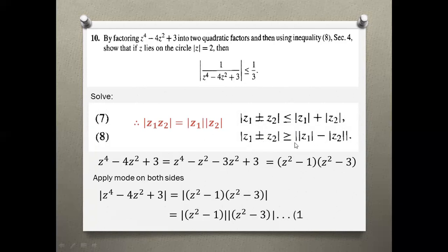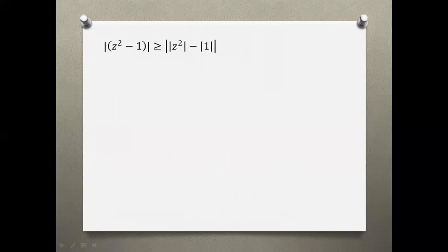We use inequality number 8, which gives us greater than or equals. We apply: |z^2 - 1| ≥ ||z^2| - |1||. The modulus of 1 is 1. For z squared, we use the power property. To use the power property, we need the modulus of z, which is given as 2.